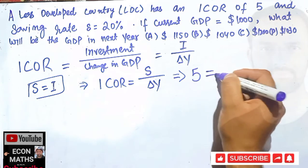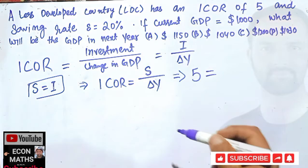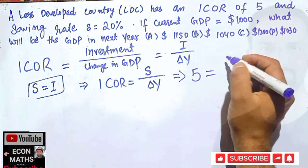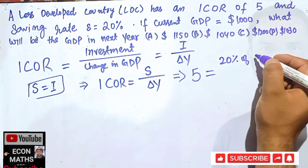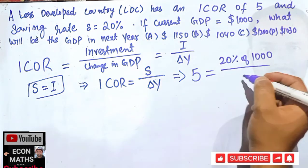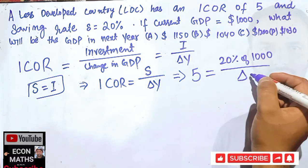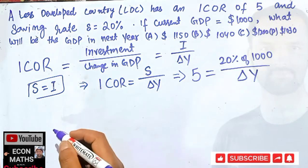what is saving rate? That's 20% of our GDP. So I can write 20% of this thousand upon change in GDP. So I will write change in Y here.